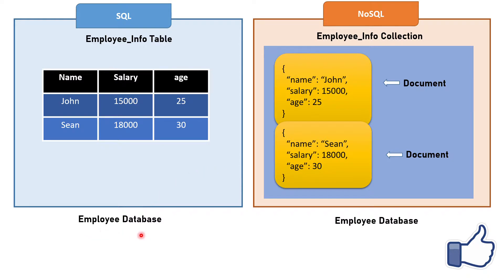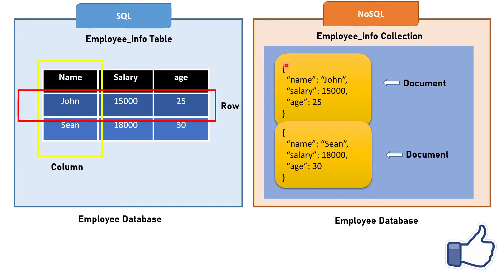Suppose we have one SQL database named 'employee' and another NoSQL database with the same name. In SQL, we have a table to store data — here the table name is 'employee info' — and it has rows and columns. In NoSQL, instead of a table we have a collection, also named 'employee info', and instead of rows and columns we have documents. Records in NoSQL are called documents, and the data inside them is in key-value pairs.